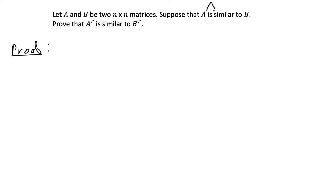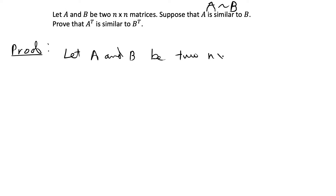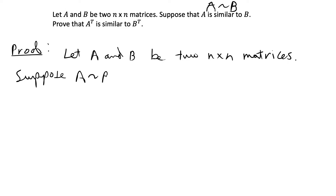In symbolic notation, when you say A is similar to B, you can write that as A tilde B. So I'm going to say again: let A and B be two n by n square matrices, and suppose that A is similar to B.